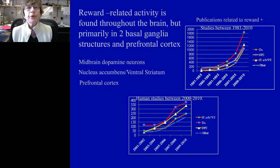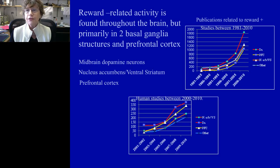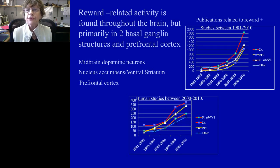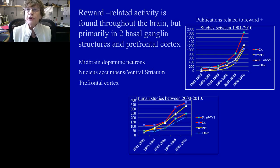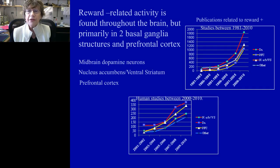Reward-related activity is found throughout the brain, but particularly in two brain regions: the midbrain dopamine cells and the nucleus accumbens/ventral striatum, and also prefrontal cortex. I'm focusing a little more on prefrontal cortex because that's the area of the brain that makes us very human, and where most of our mental health problems arise from. Looking at these charts, you can see that publications and imaging studies related to these three brain regions have really skyrocketed in the last few years — dopamine, the prefrontal cortex, and the ventral striatum.